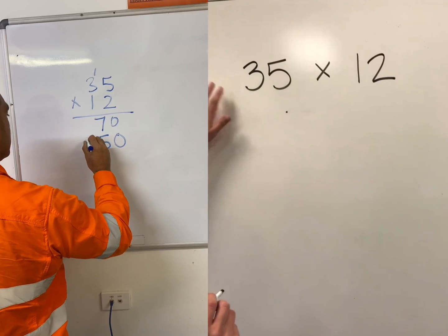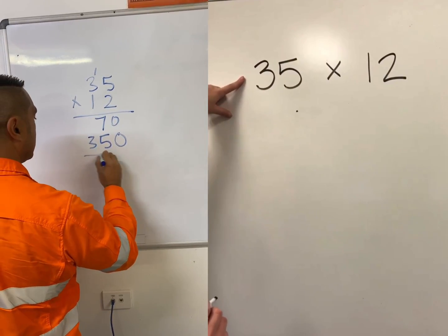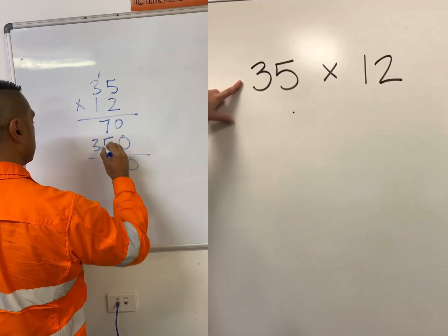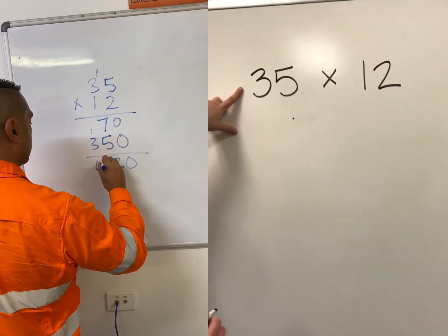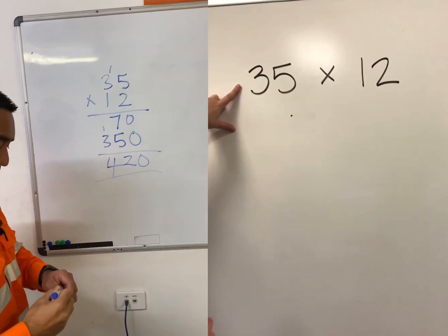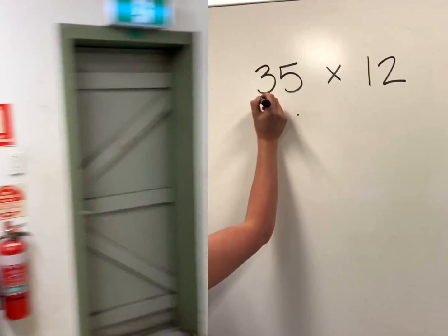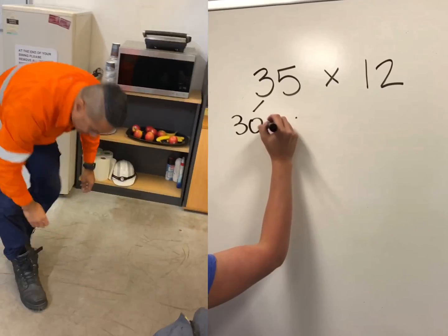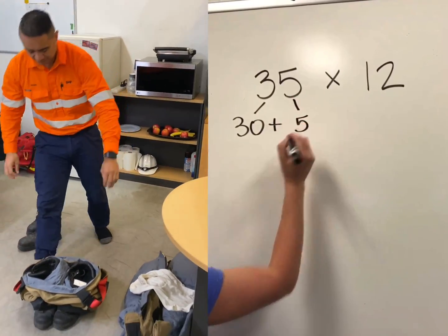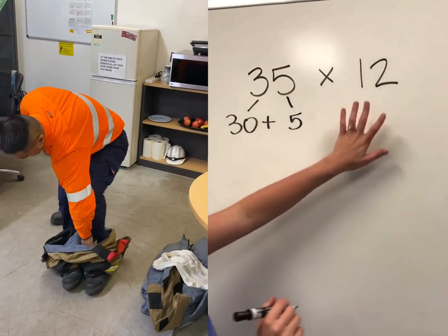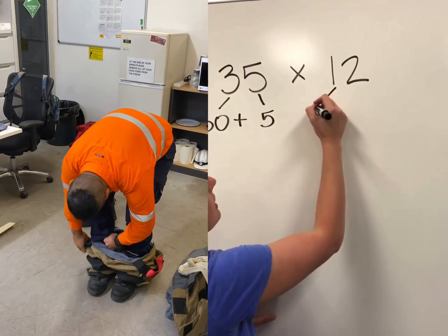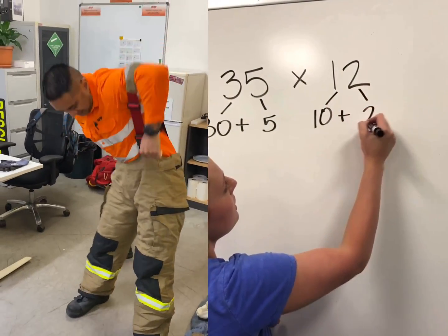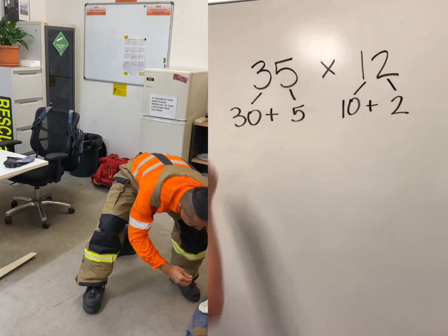So the first thing is we have our multiplication problem: 35 times 12. The first thing we need to do is expand these two numbers — break them down into their tens and ones. I've got three tens which is 30 and five ones, so that is 30 plus 5. And 12 is one ten plus two ones. Okay, so that's step one.